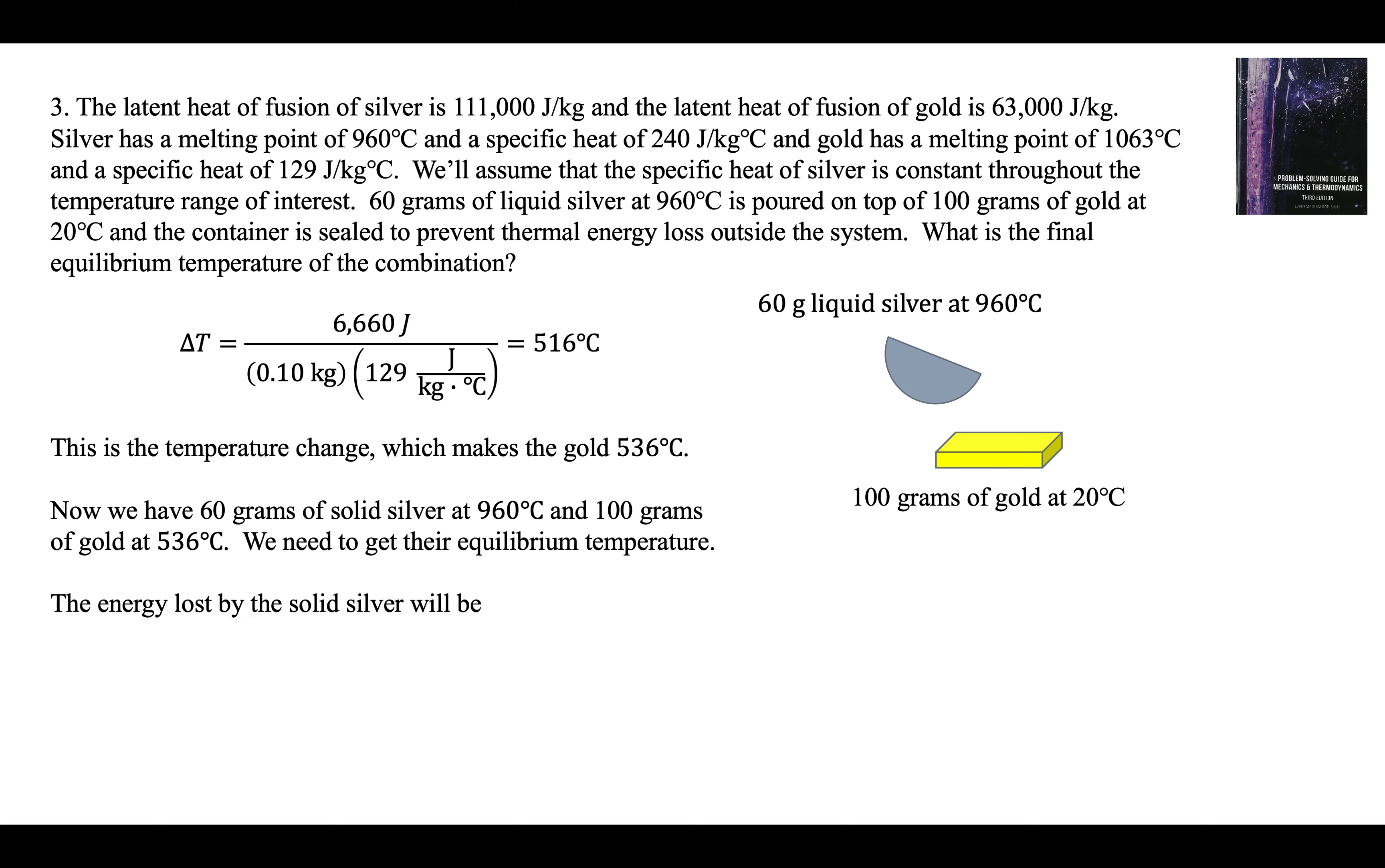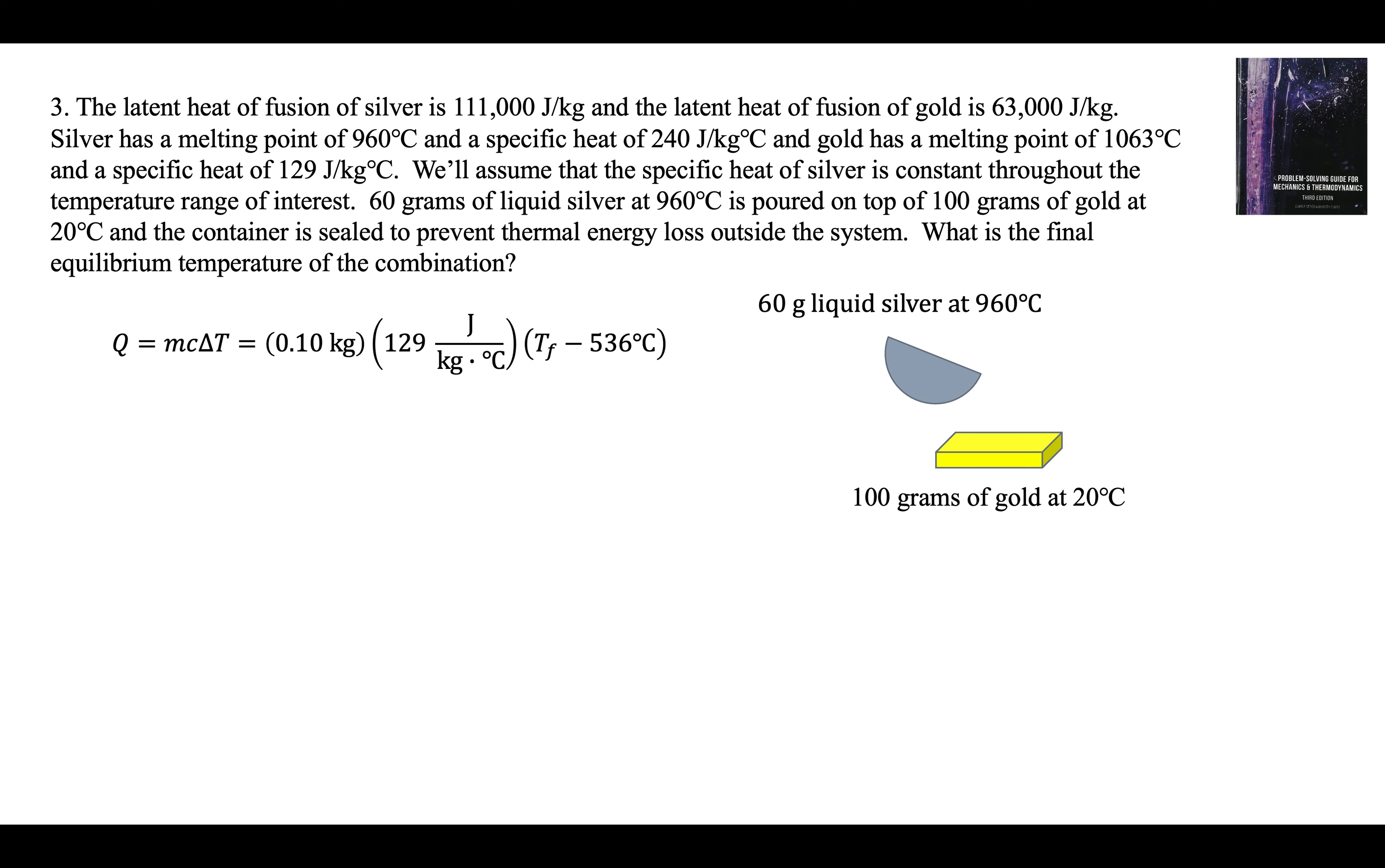Now the energy lost by the solid silver. We need the specific heat of silver and here it is, 240 joules per kilogram per degree Celsius. The temperature change of the silver is 960 minus T final and we have 60 grams which is 0.06 kilograms. Energy gained by the gold is MC delta T for the gold. We have 100 grams of gold. There's the specific heat of the gold. The delta T for the gold is T final minus 536.